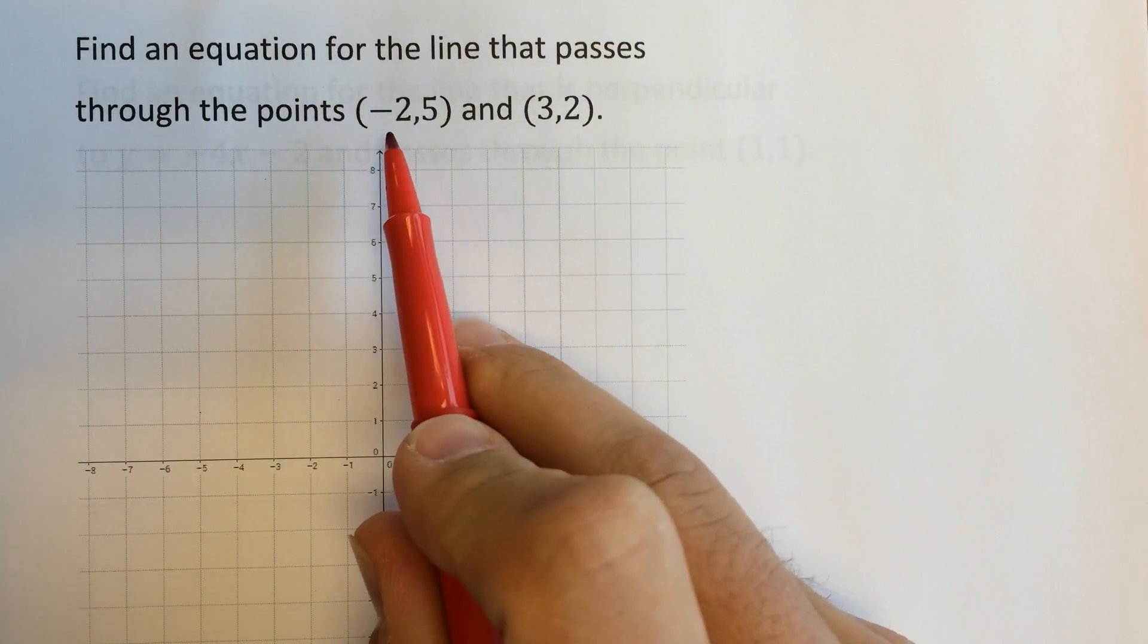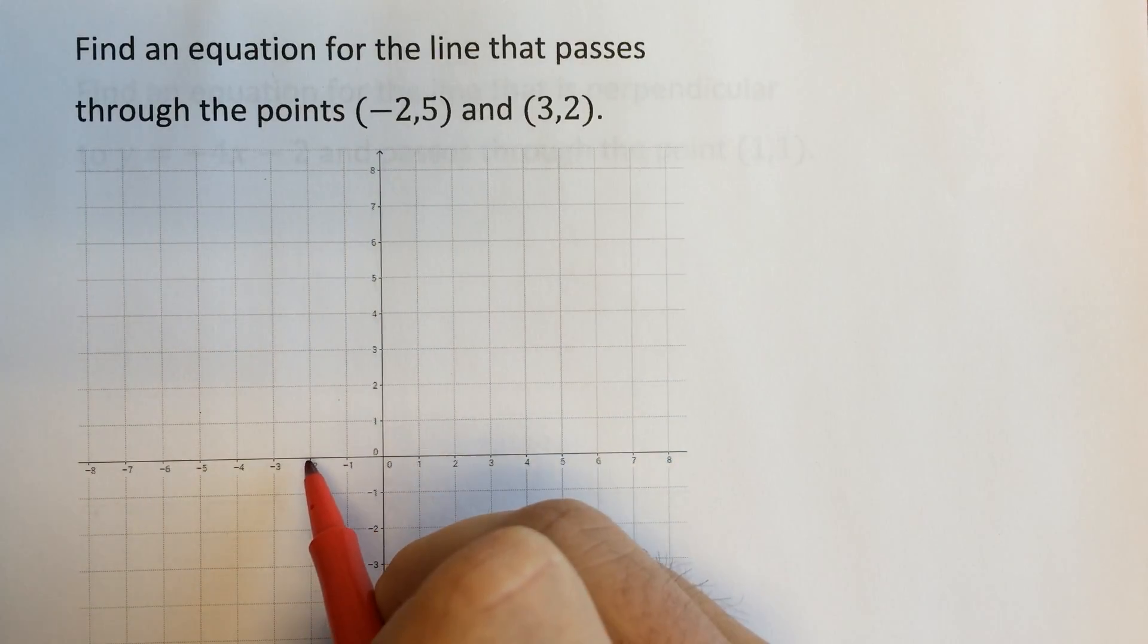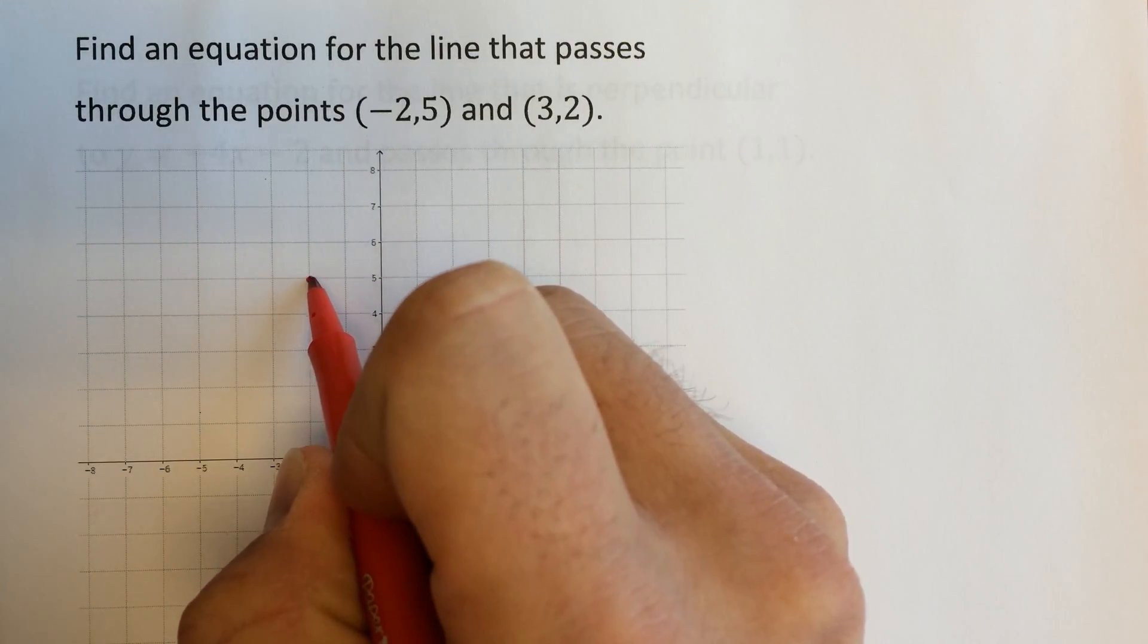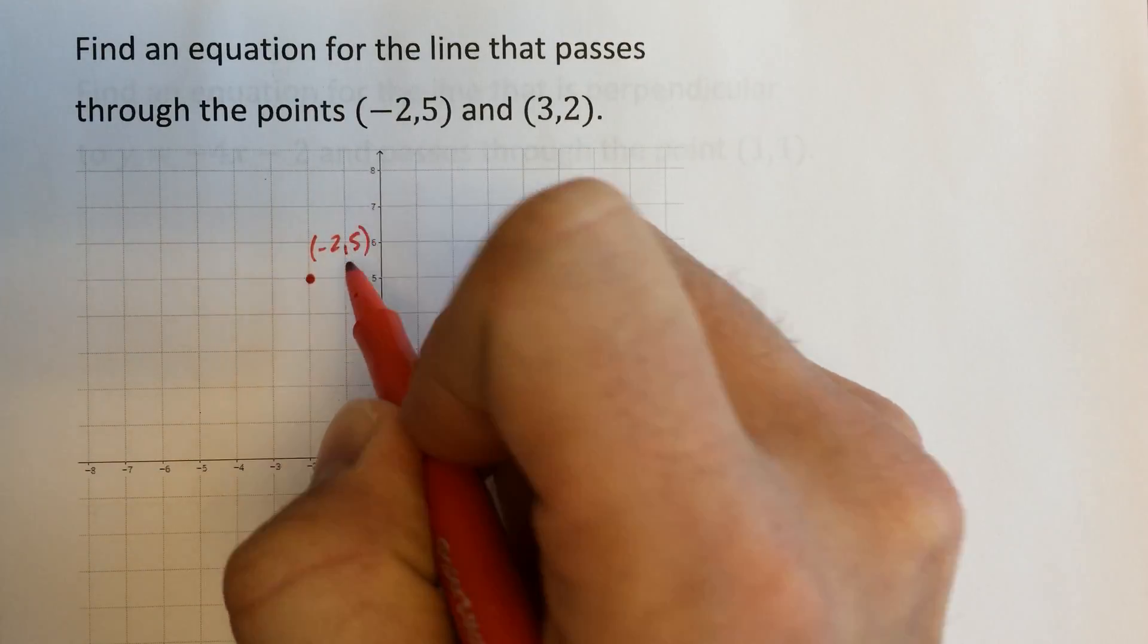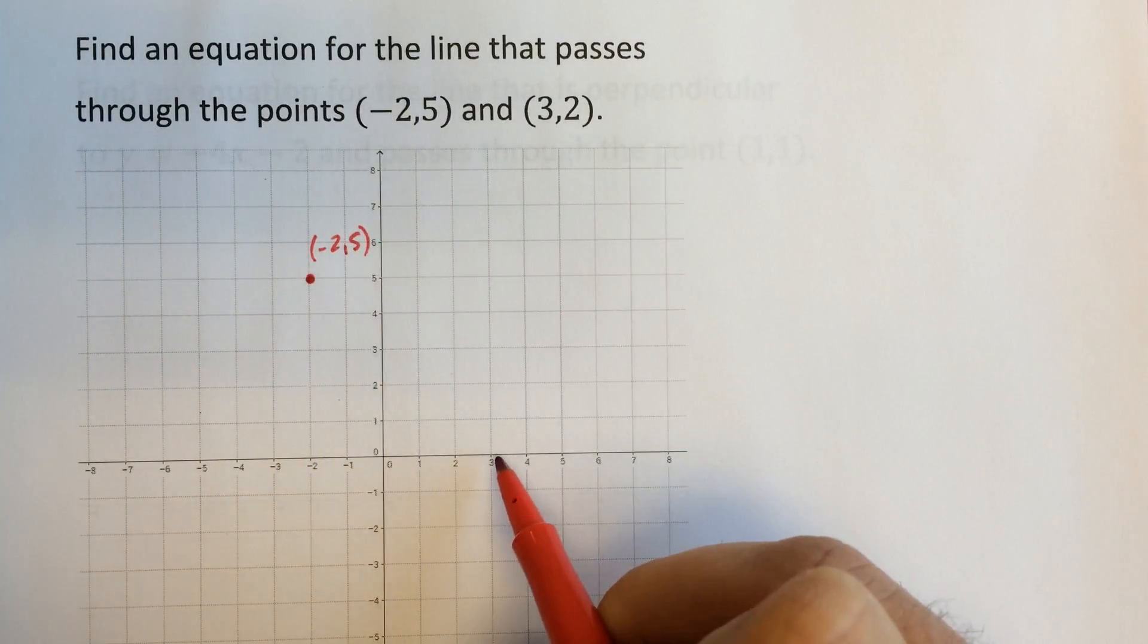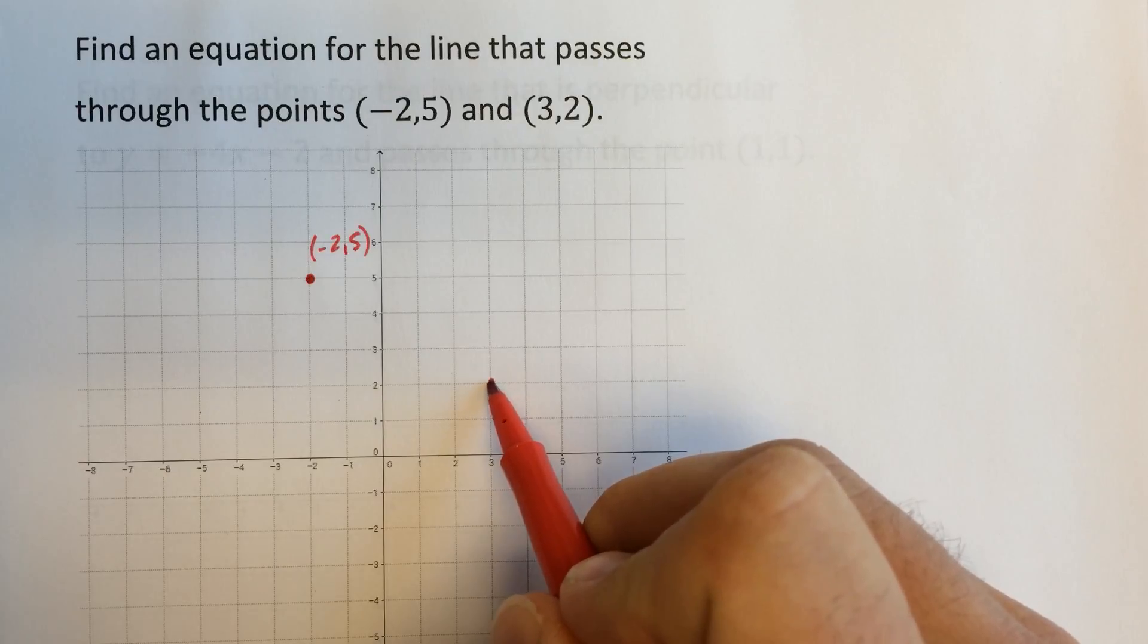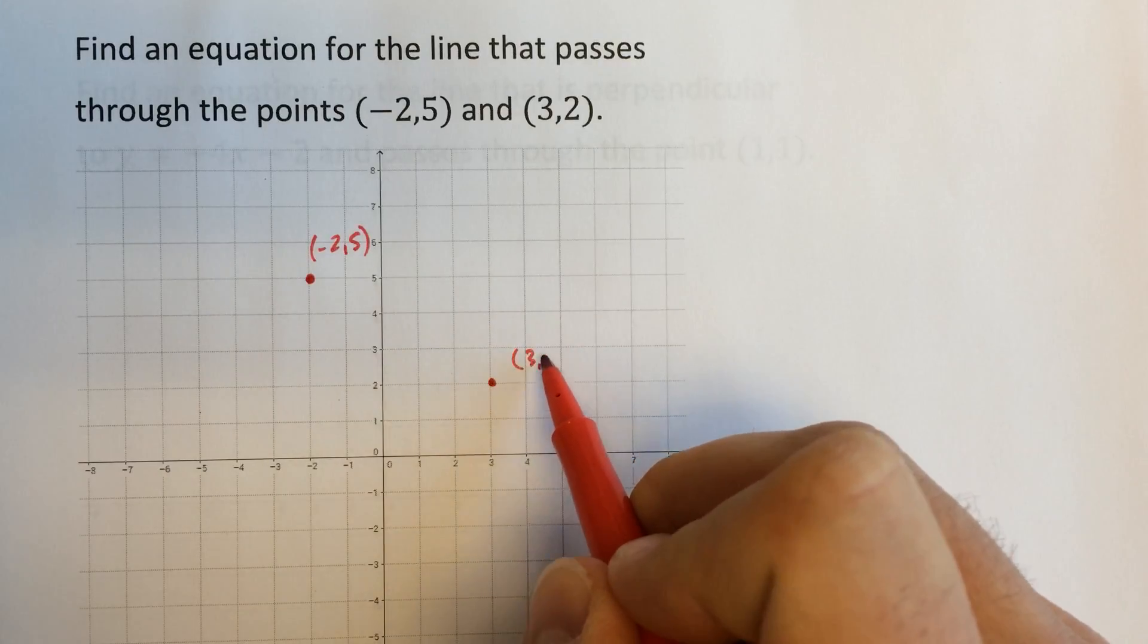So for the first point, negative 2, 5 is back here and then up 5. And let's just label that negative 2, 5. And 3, 2 is here and up here. We'll label that there.